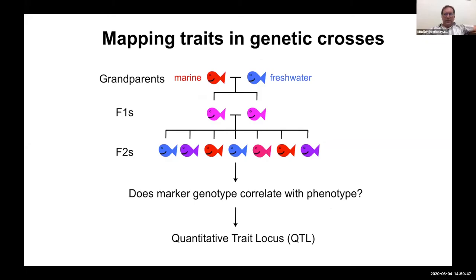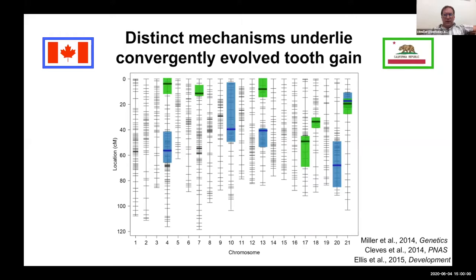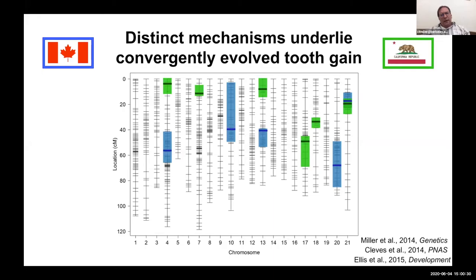Tooth replacement in fish and sharks is not like in humans, where the replacement tooth dislodges the one it's replacing. Instead, replacement teeth form adjacent to the tooth being replaced, so our model is that the replacement rate is sped up and replacement teeth are retained in the field longer. We wanted to know if the genetic basis of this trait was the same or different in these two convergently evolved populations, so we used QTL mapping, crossing marine and freshwater fish, intercrossing F1 hybrids, and mapping genome-wide regions regulating the increase in tooth number.